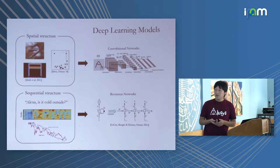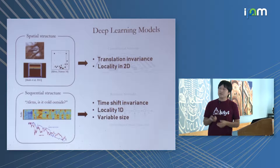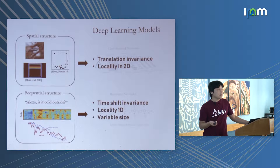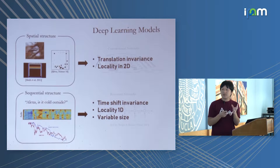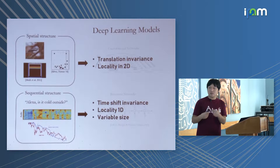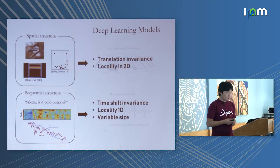In the case of a convolutional network, it knows that the image is translation invariant and that the image has locality in two dimensions. The same is true for sequences: if you shift the sequence it should be processed in the same way, and you don't want a fixed-length sequence because sequences can have different sizes, so we want a model that can handle those features.